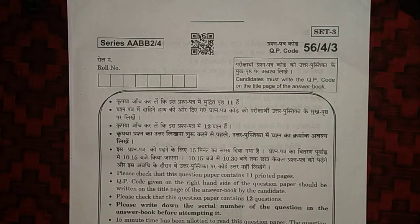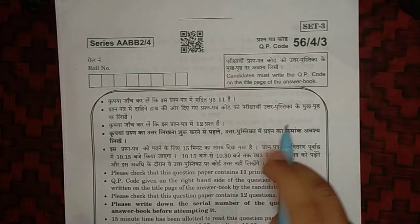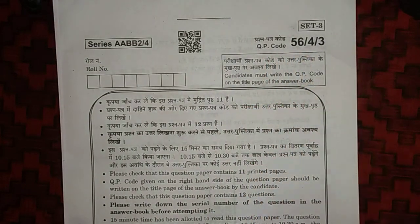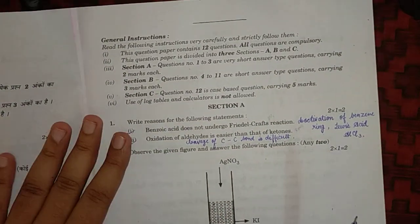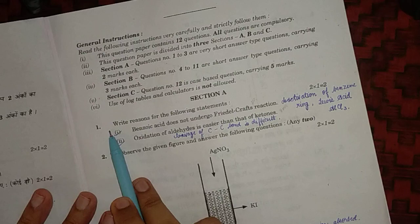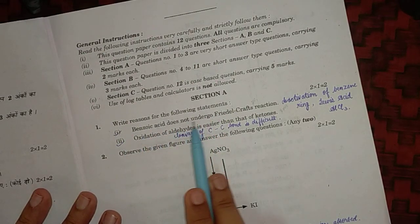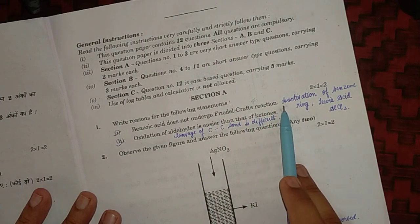Hello everyone, today we have Class 12th Chemistry question paper Set 3, question paper code 5643. Let's begin with Section A, first question: write reason for the following statement - benzoic acid does not undergo Friedel-Crafts reaction.